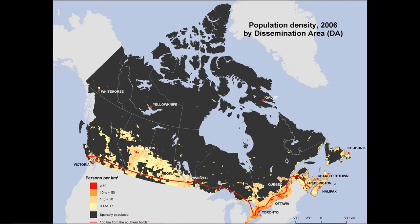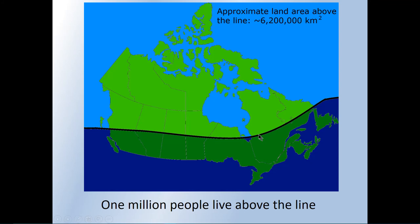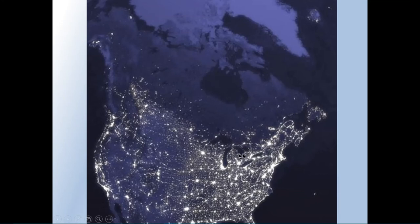Another slide reveals that only one million people live above a certain line in Canada — not many people in this huge territory. We're really a country trying to stay as south and warm as possible. Another dramatic nighttime satellite image shows how dense the lighting is in the populated corridor, while vast areas are dark. Note that Iceland and Alaska are also visible with minimal lighting.